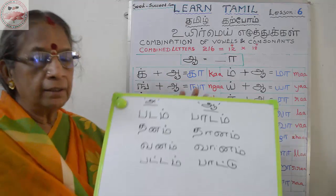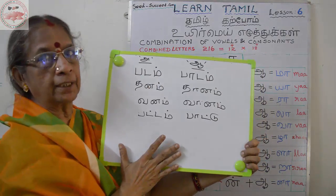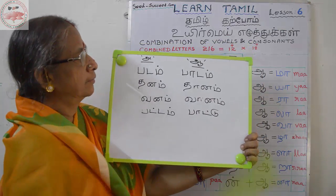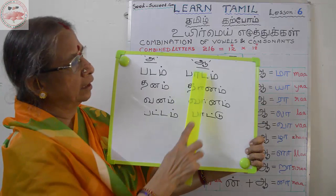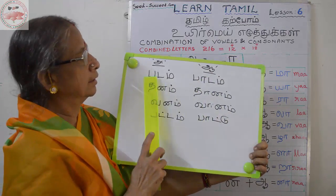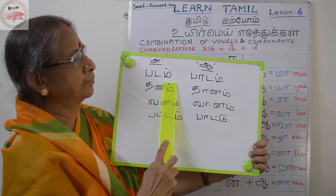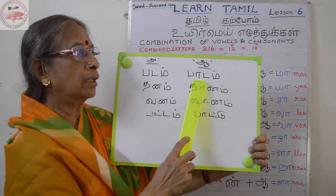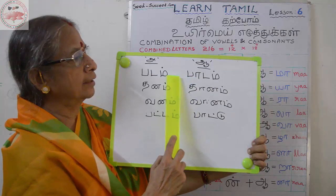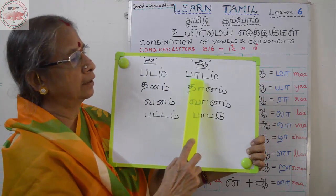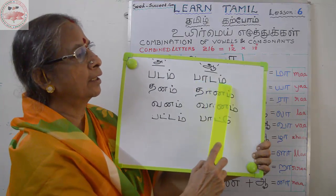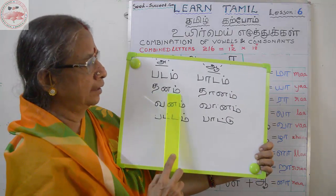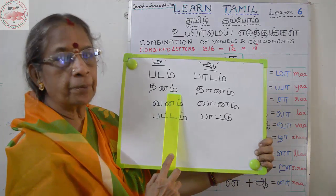Now let's see two examples. Padam — padam means picture. This is Pa, Da, Im: Padam. That is lesson. Da, Na, Im: Thanam — selfam, prosperity.